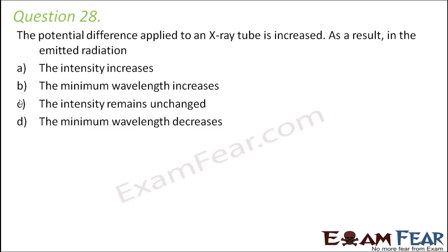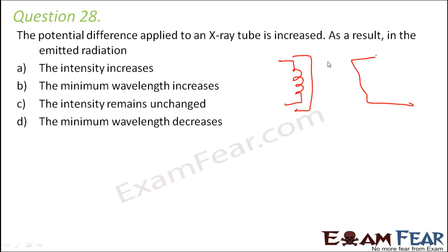Question number 28: The potential difference applied to an X-ray tube is increased. As a result, which of these is correct — emitted radiation intensity increases, minimum wavelength increases, intensity remains unchanged, or minimum wavelength decreases? In the X-ray tube setup, there is a filament and a target material with a potential difference maintained between them.